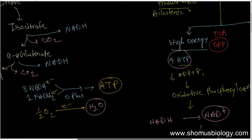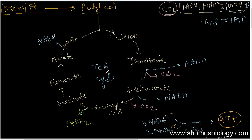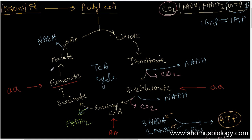One more important point: proteins and amino acids can also enter the TCA cycle, not only via acetyl CoA but through multiple entry points. Amino acids can contribute to producing alpha-ketoglutarate, entering the cycle there. They can also produce succinyl CoA, or convert to fumarate, or convert to oxaloacetate — each providing a different entry point.